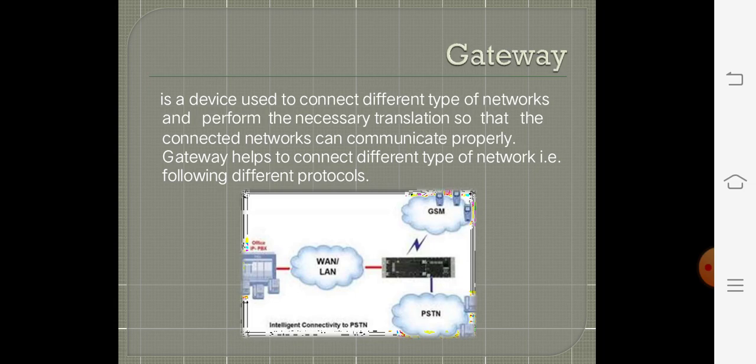The next one is gateway. It is a device used to connect different types of networks and platforms. It also performs the necessary translation so that connected networks can communicate properly. Gateway is one of the most important devices for networking, mainly used by the internet. It connects different types of networks like LAN, WAN, GSM, and mobile phones to the modem. It is independent of any protocol, any type of network, and any type of topology — it can connect any type of network.